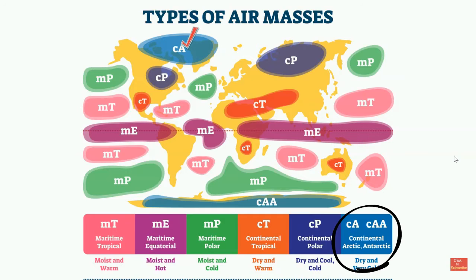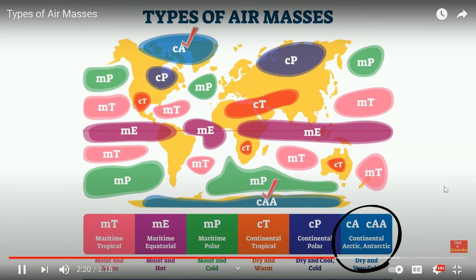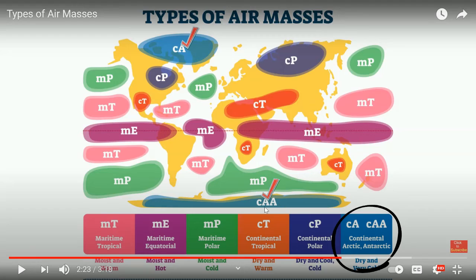Continental Arctic and Antarctic air masses are very cold and dry. We will go over continental Arctic. Arctic is in the Northern Hemisphere, and Antarctic — because it's the opposite — is in the Southern Hemisphere. That's the difference between the abbreviations CA and CAA. They are light blue and located very far to the north and south.